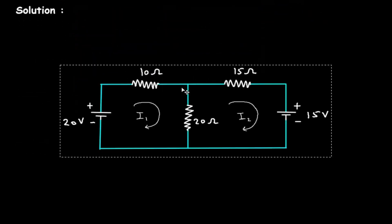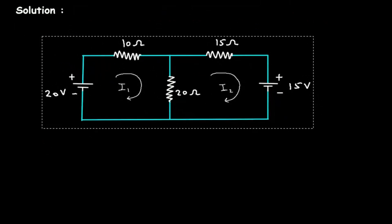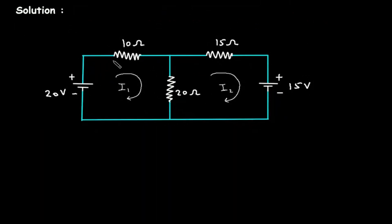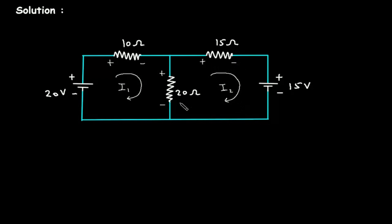Solution. First we will redraw the circuit. Now we will assign higher and lower potential to these resistors. According to the direction of this current, this will be positive and this will be negative. Here, this will be positive and this will be negative. According to the direction of current I2, this will be positive and this will be negative. This will be positive and this will be negative.